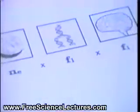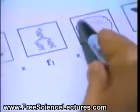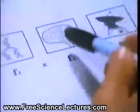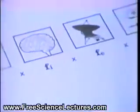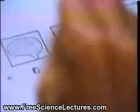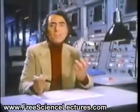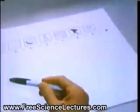It depends on the fraction of inhabited planets on which intelligence emerges. If we multiply all these numbers together, we've estimated capital N, the number of civilizations.